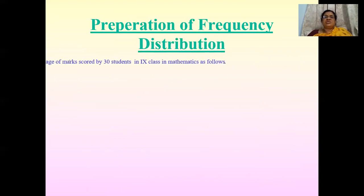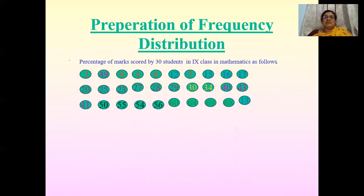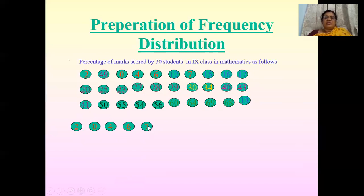Now we prepare the frequency distribution table for marks secured by 30 students of class 9 in their final examination. The marks are out of 100. We take the class limit from 0 to 9. In the class limit 0 to 9, five students have secured marks — specifically 2, 0, 4, 6, and 7. So the total number of students in this class is 5.